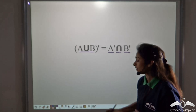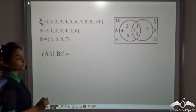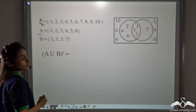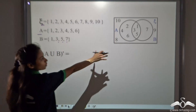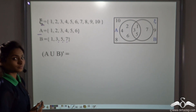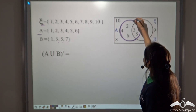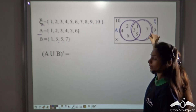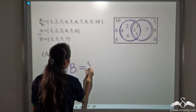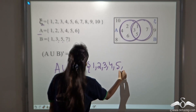Let's see if this holds true with numbers. The universal set contains natural numbers till 10. Set A is natural numbers till 6 and set B is odd numbers from 1 to 8, that is 1, 3, 5 and 7. A Venn diagram is provided. A union B means elements that belong to either A or B or both, giving us 1, 2, 3, 4, 5, 6 and 7.